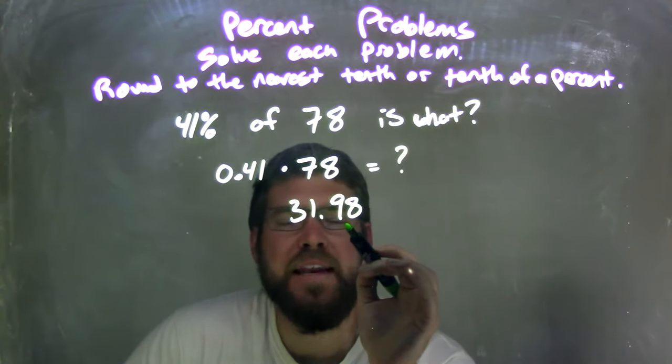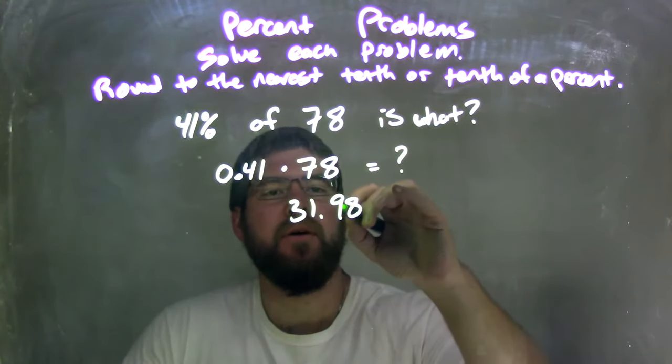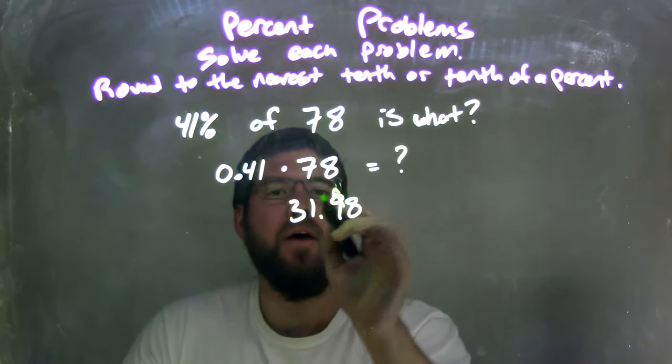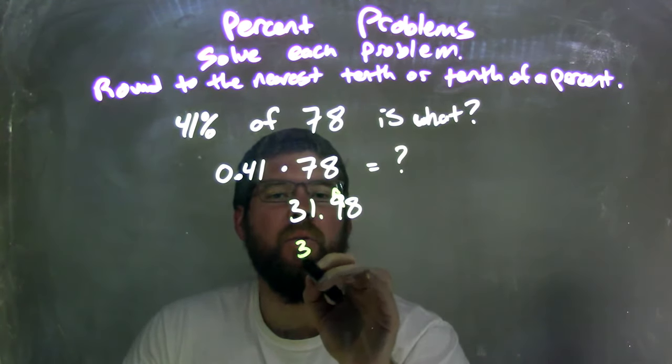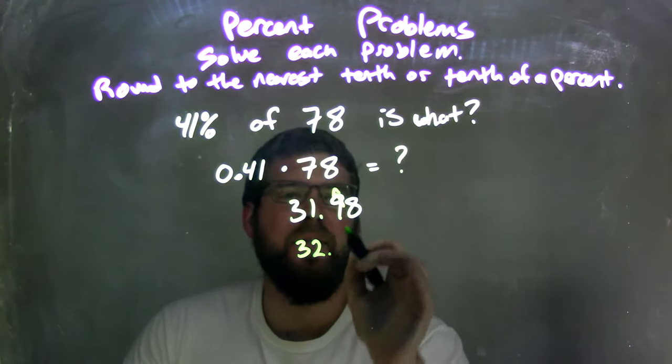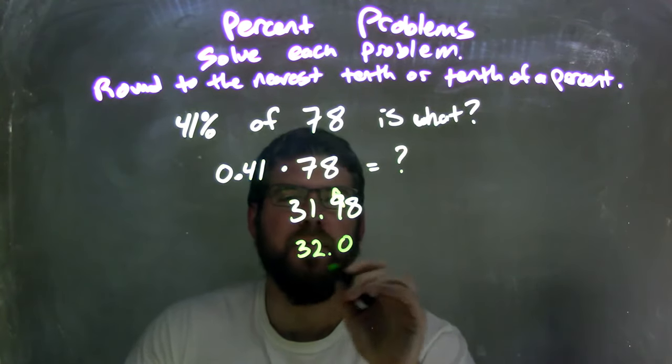That 8 causes the 9 to round up. That 9 rounds up here, making that 1 becoming a 2. And that 9 then moves up the next one-tenth, which is a 0.